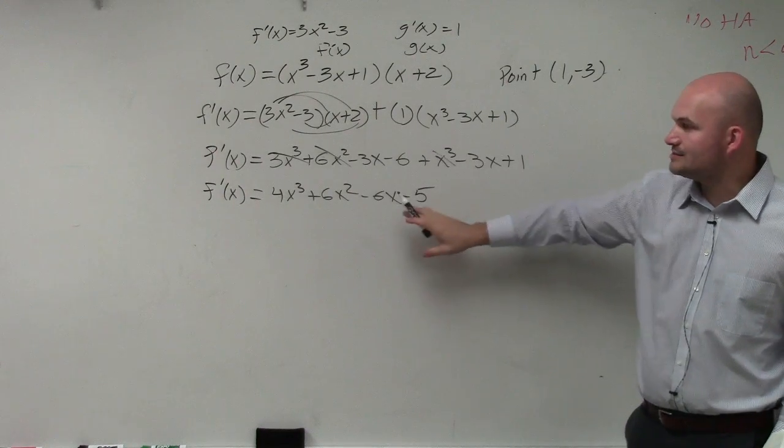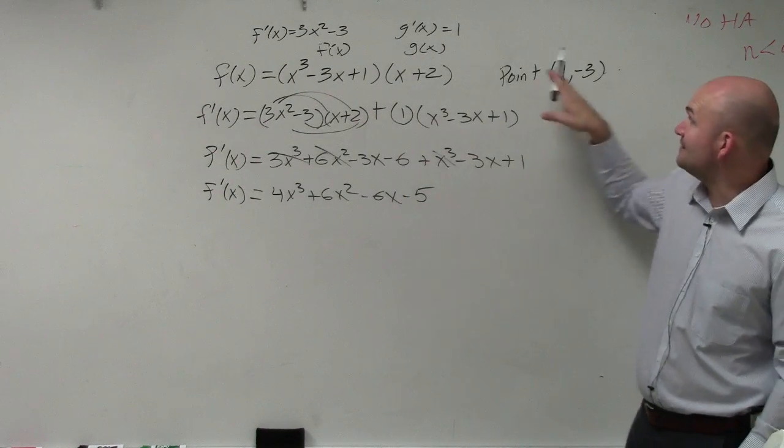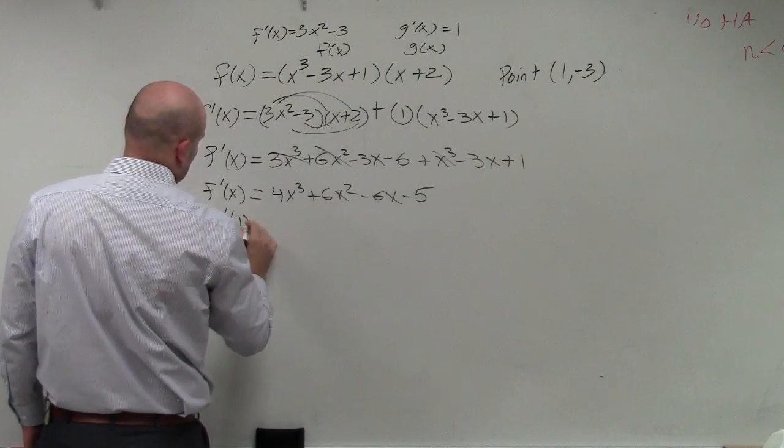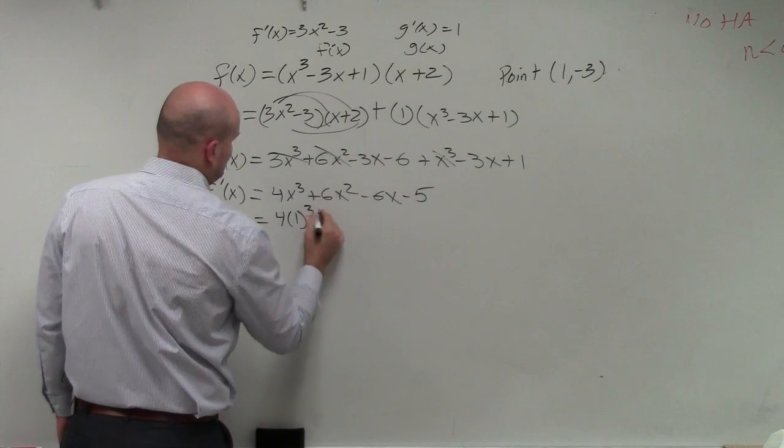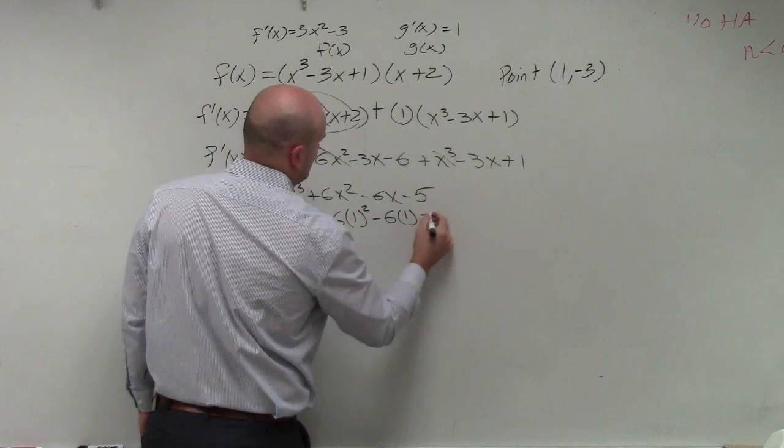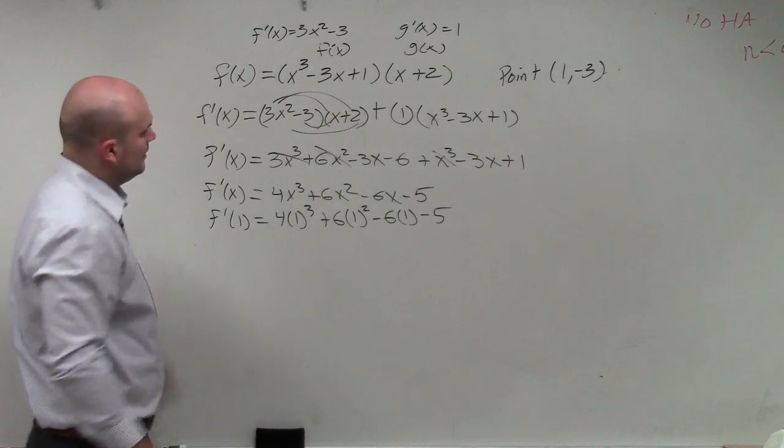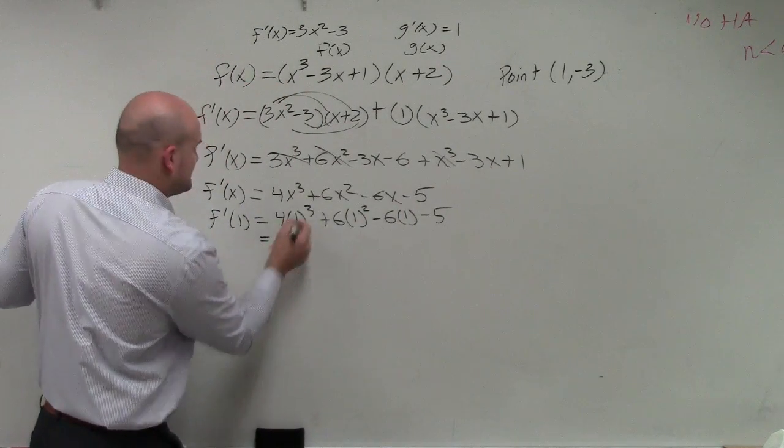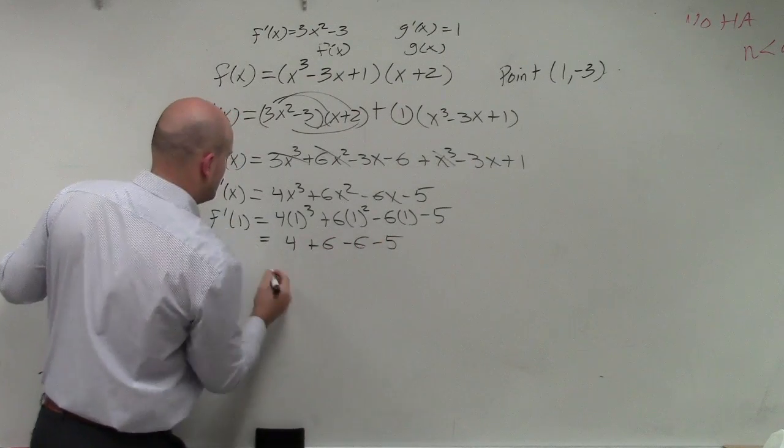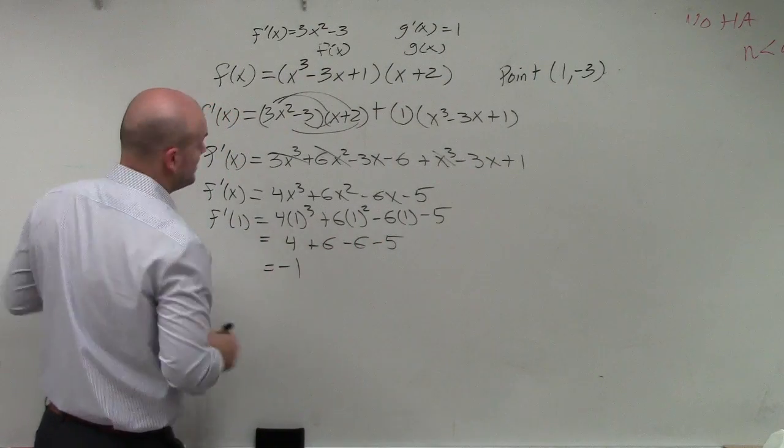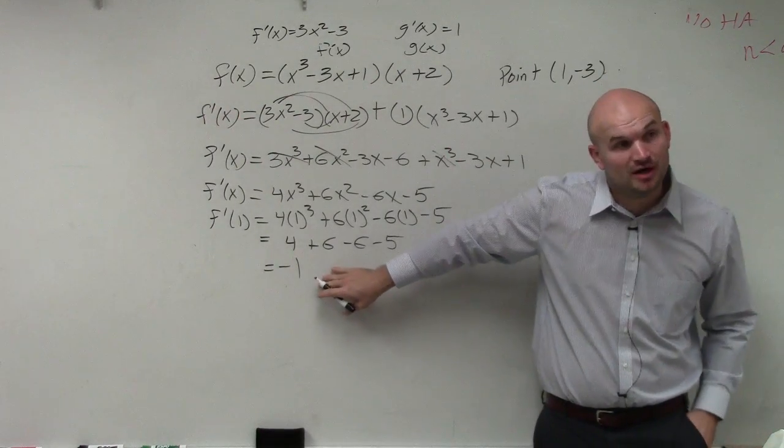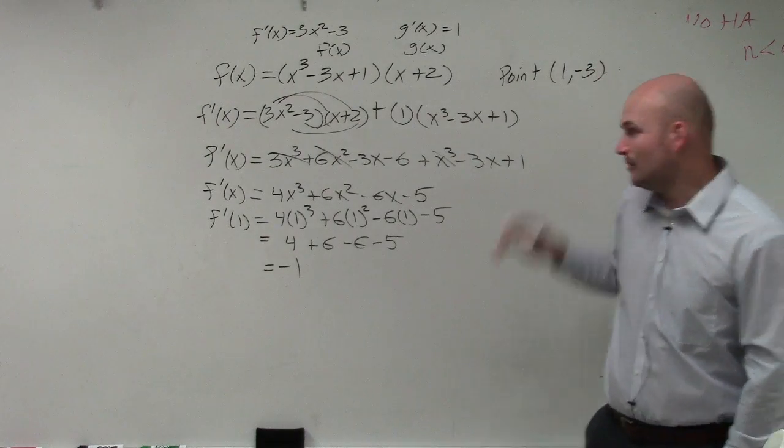So now what we need to do is we need to find the actual slope at the point. So I need to evaluate f prime of 1. So therefore, that gives us 4 plus 6 minus 6 minus 5, which equals negative 1. So therefore, this graph, we now have a slope of negative 1 at that given point.